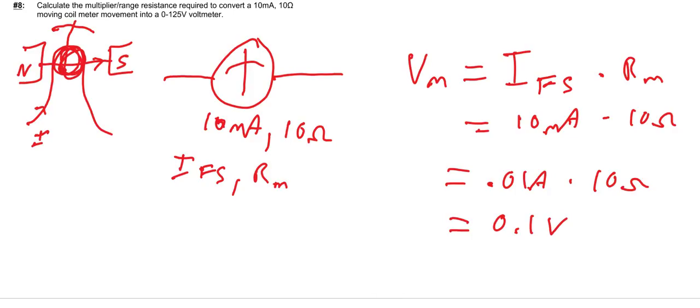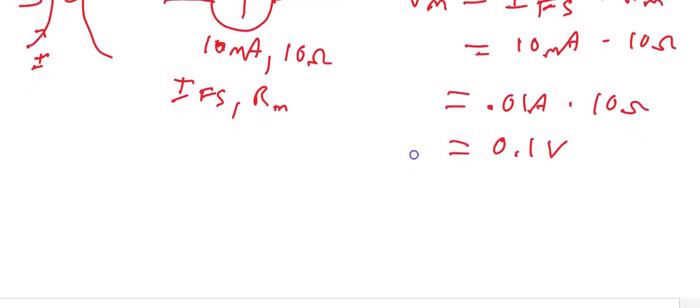Okay, so the rules of series circuits tells us that resistors in series will add voltage. Now in this question we want the voltage across the circuit to be a maximum of 125 volts, which occurs when the full value of 10 milliamps flows through the movement and of course the circuit.